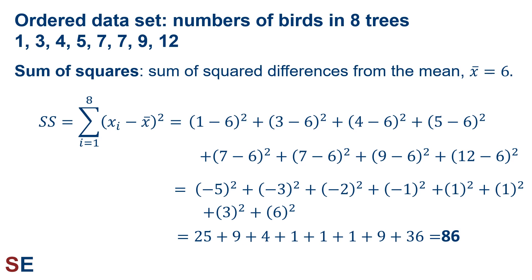Returning to the rest of our spread statistics, we'll now look at the sum of squares. The sum of squares is the sum of the squared differences from the mean, which we calculated to be 6. We sum from i equals 1 to 8 of (x_i minus the mean) squared. So for each value — 1, 3, 4, 5, 7, 7, 9, and 12 — we subtract 6, square the result, and add them all up. That gives us a sum of squares of 86 for this data set.